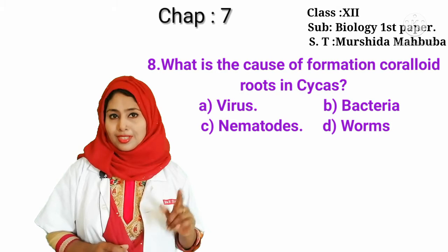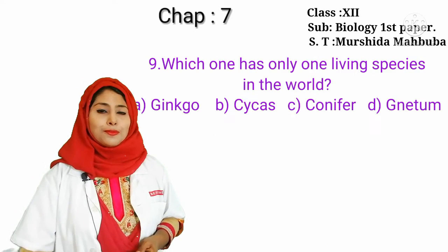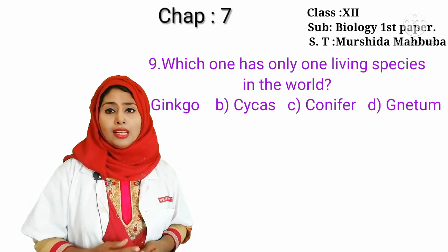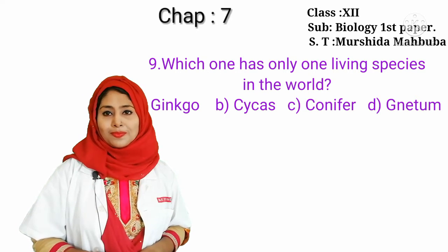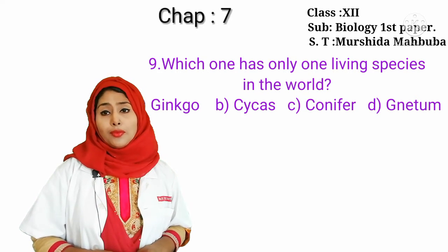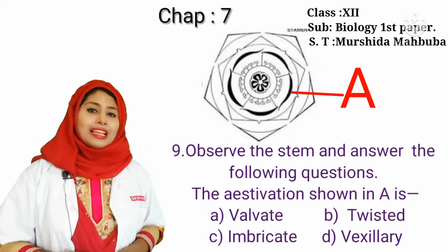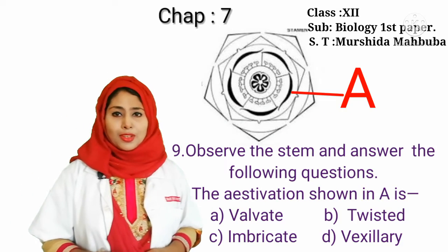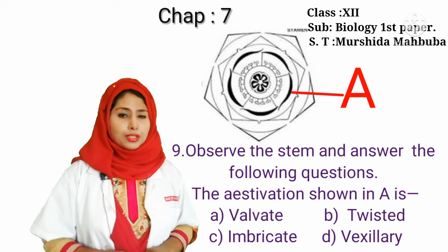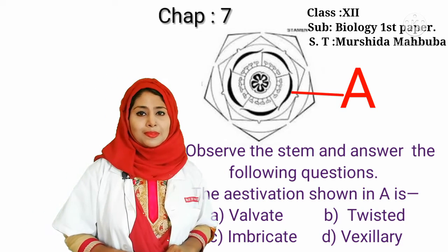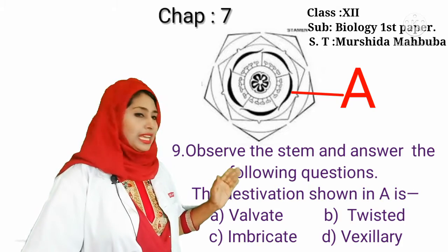Which one has only one living species in the world? Only one living species — the correct answer is Cycas. Then observe the stem and answer questions 9 and 10. The aestivation shown — is this aestivation twisted?